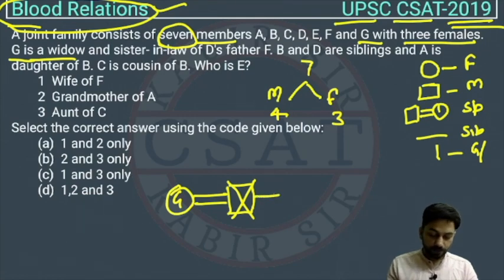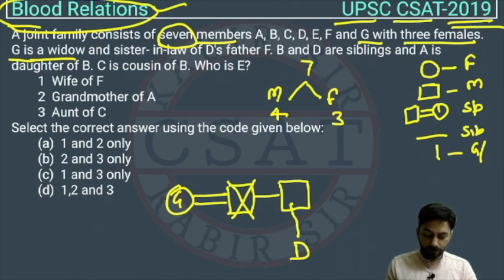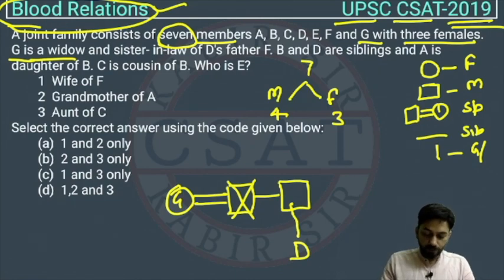G is a widow and sister-in-law of D's father. So D will be placed here. G will become sister-in-law because G's husband's brother will come here. Now, B and D are siblings, so B and D are placed together.